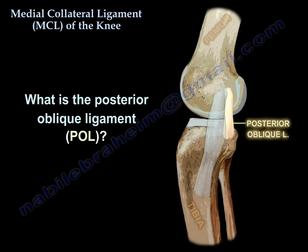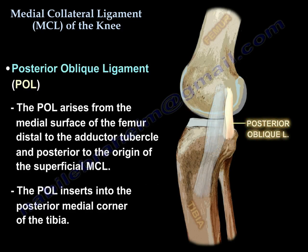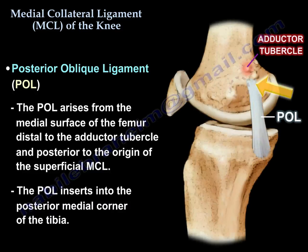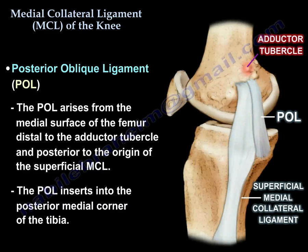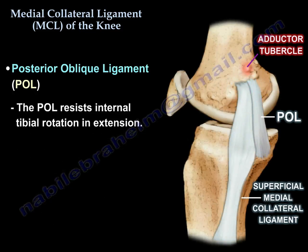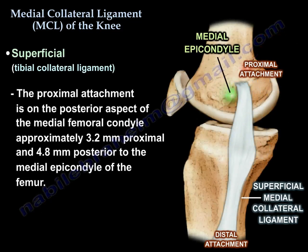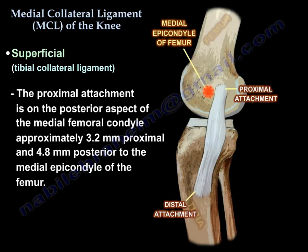What is the posterior oblique ligament (POL)? It arises from the medial surface of the femur distal to the adductor tubercle and posterior to the origin of the superficial MCL. It inserts in the posterior medial corner of the tibia and resists internal tibial rotation in extension. The proximal attachment of the superficial MCL is approximately 3.2 mm proximal and 4.8 mm posterior to the medial epicondyle of the femur.